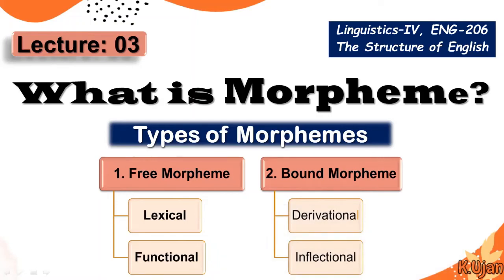Welcome, everyone. Today we are going to talk about what is a morpheme. Our focus is on types of morphemes, which are divided into free morphemes and bound morphemes. Free and bound morphemes are further divided into two other categories. This is our lecture number three. We already have talked about the very basic information in our lecture on morphemes. This lecture is for the students of linguistics part four, English code 206, the structure of English.